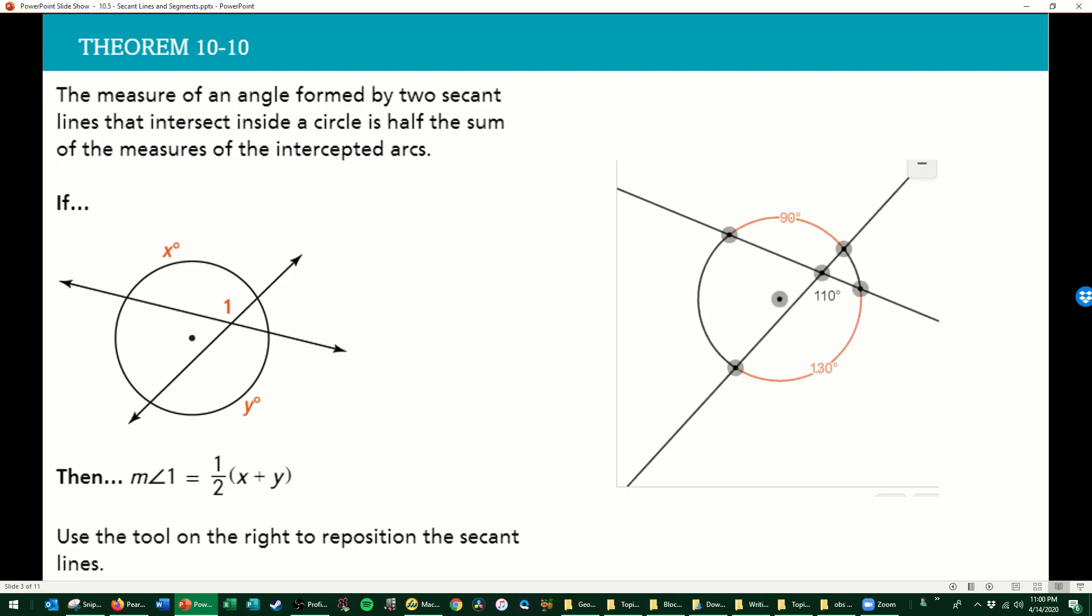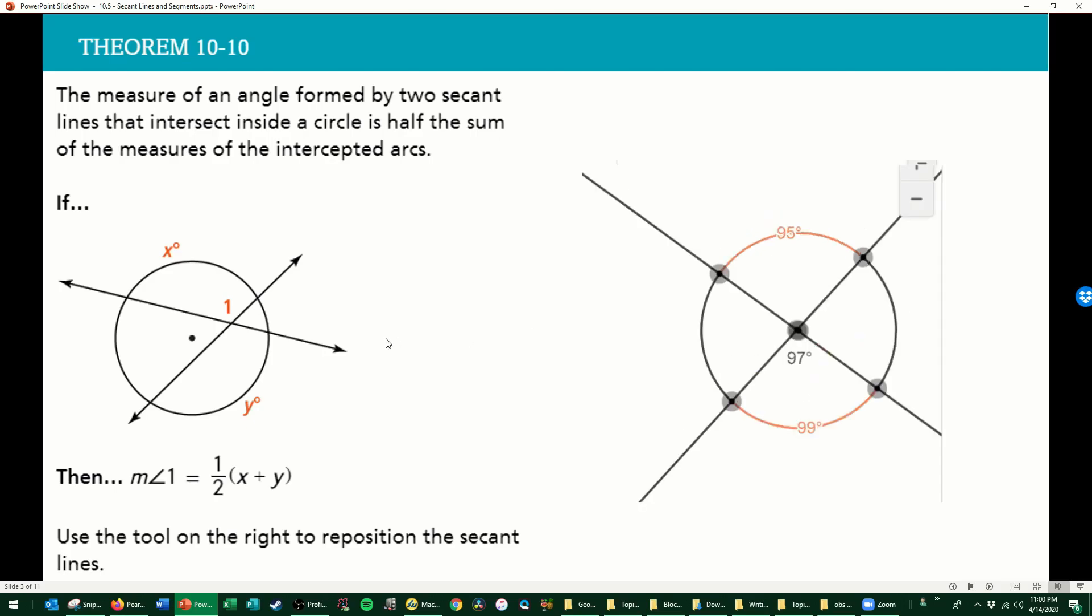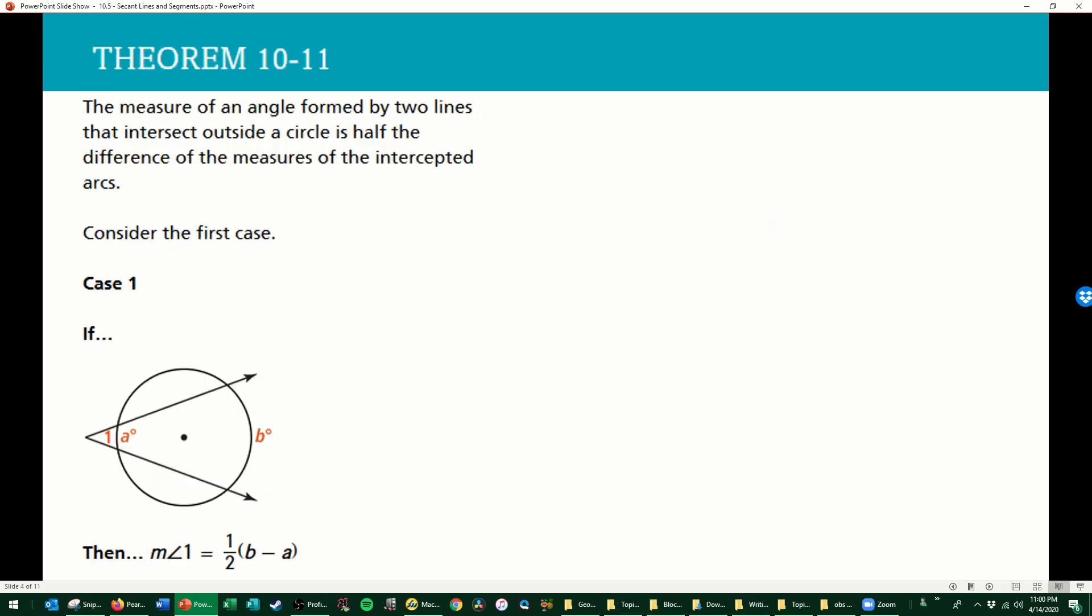If you want to look at those, pause, try it out. 90 plus 130 is 220, divided by 2 is 110. That one's for you to do and verify. All right.